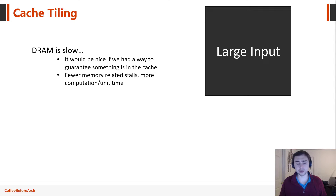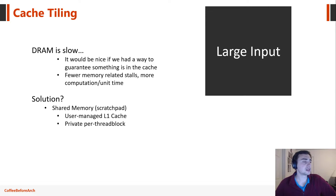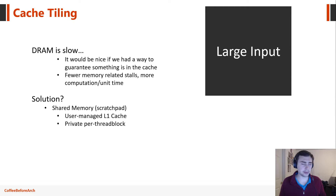This idea of how can we guarantee that things are going to be in the cache — the solution for CUDA-enabled NVIDIA GPUs is shared memory, sometimes called scratchpad memory. Scratchpad memory is a user-managed L1 cache — that's the easy way to think about it — and it's private per thread block. When we say user-managed, this means the programmer actually loads values directly into shared memory and they stay there, giving us a roughly five-to-ten cycle access time versus the hundreds of cycles it would take to go all the way out to DRAM.